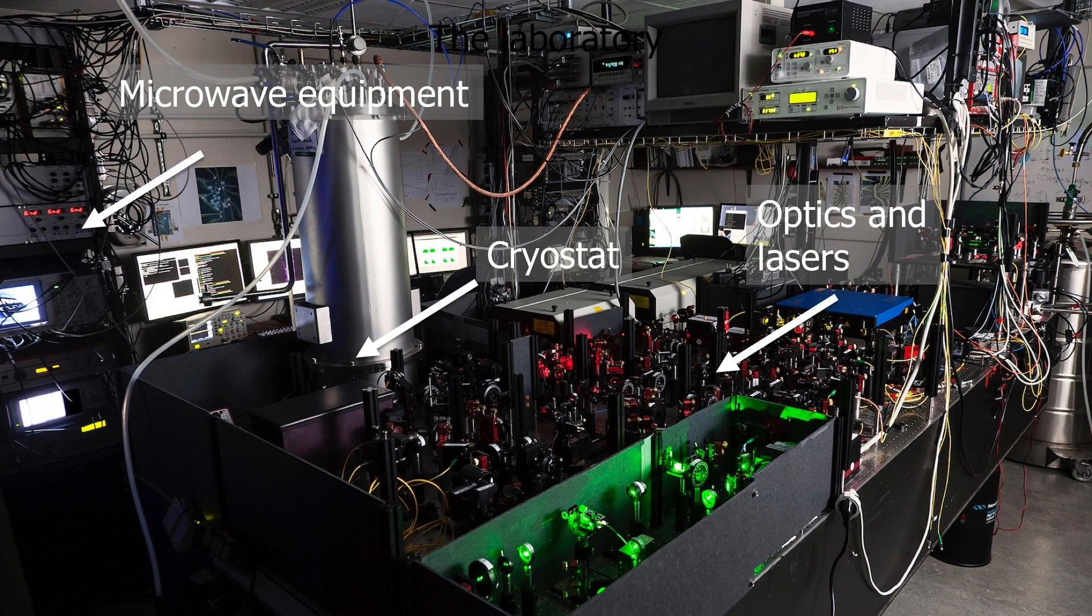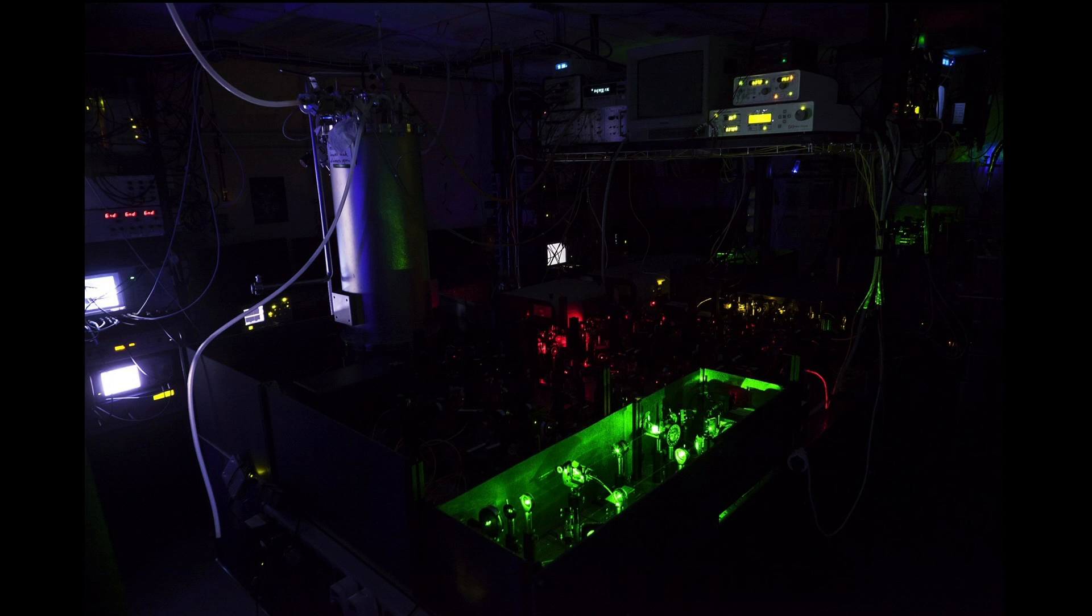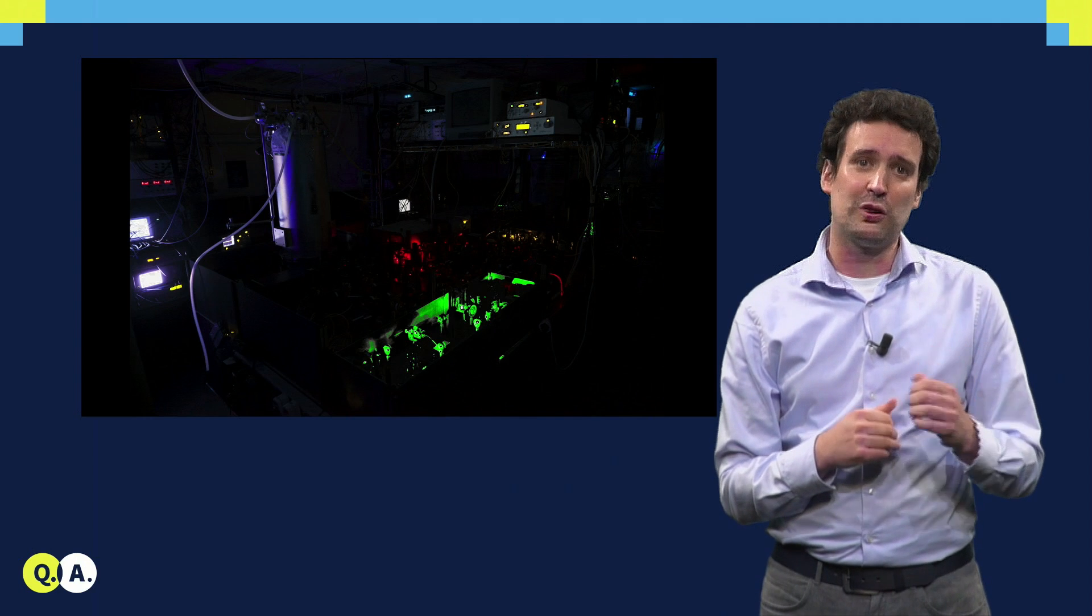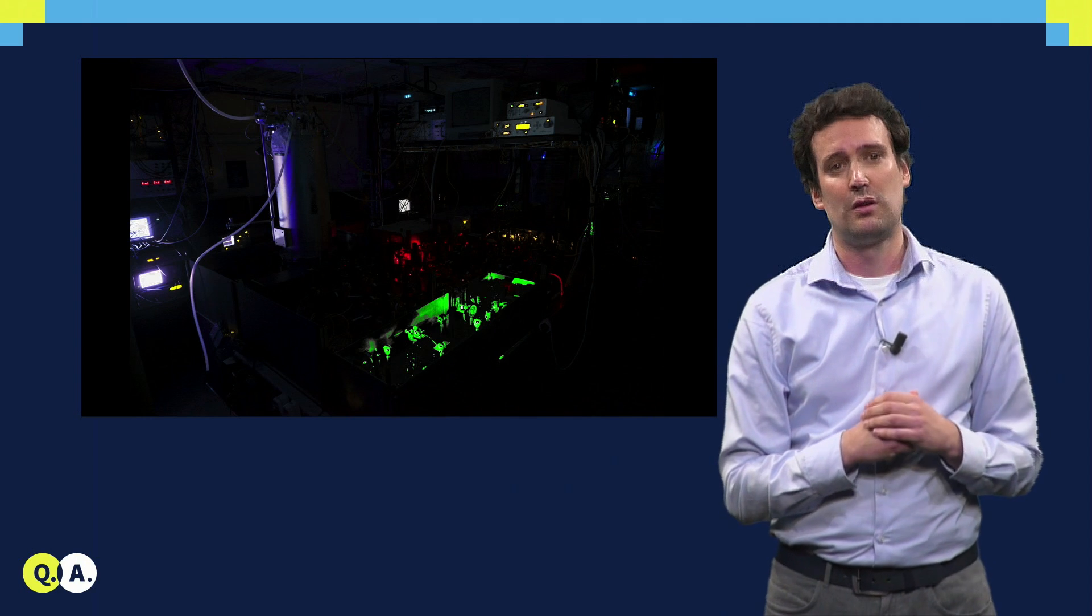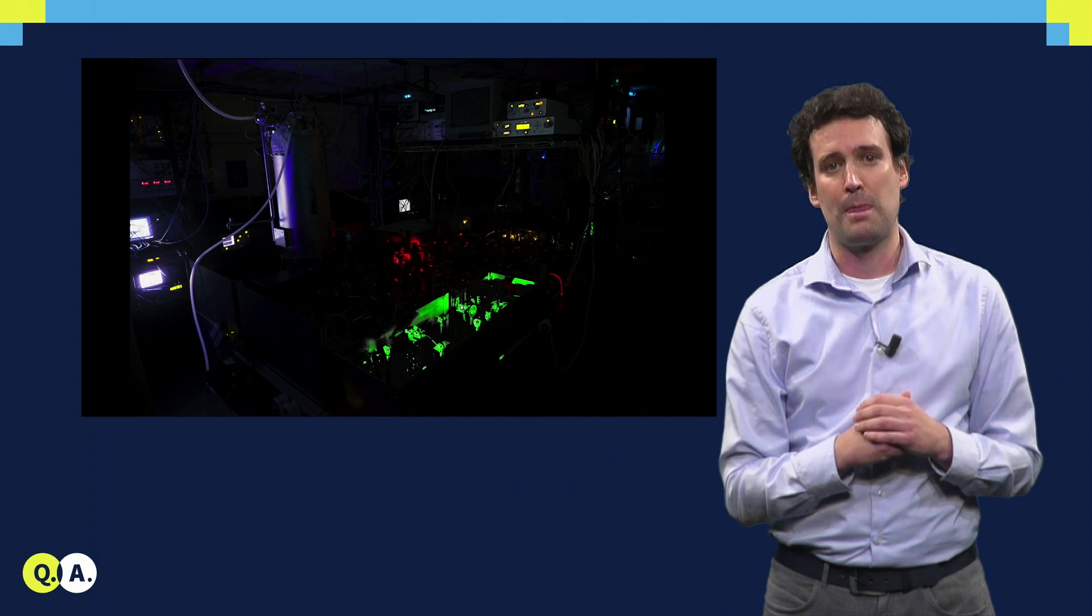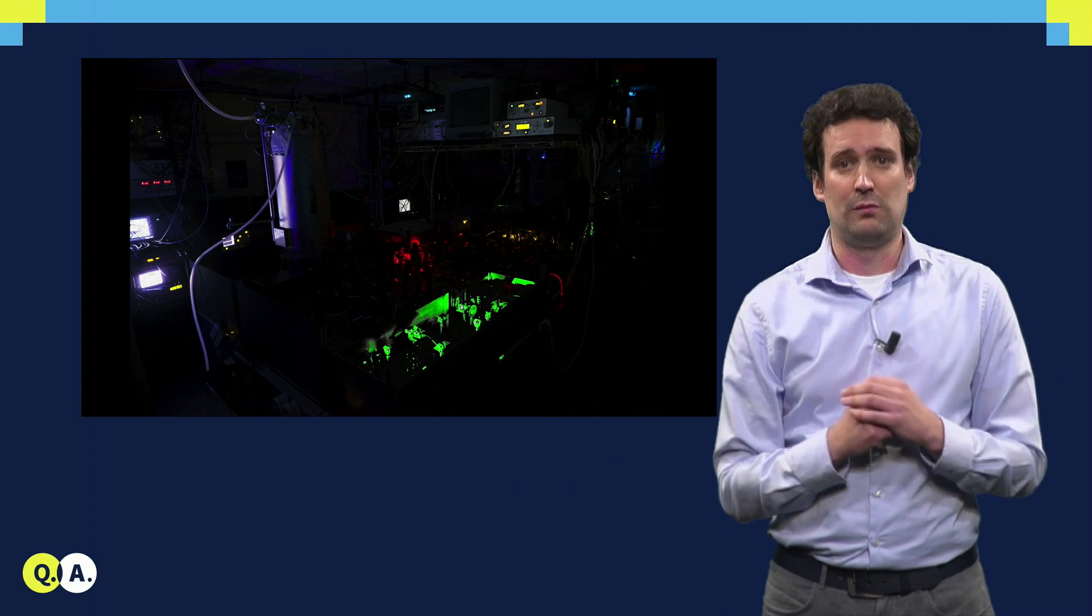This is what it looks like in an actual laboratory. The tube that you see is a cryostat that contains the diamonds, cooled down to 4K. You can also see a lot of optics and lasers to measure the spin, and microwave electronics to control it. Of course, in reality, when the system is running, it is dark like this. That's because we have to detect single photons coming from these NV centers. But we will leave this running for now.